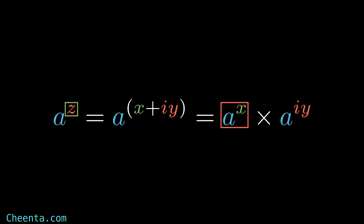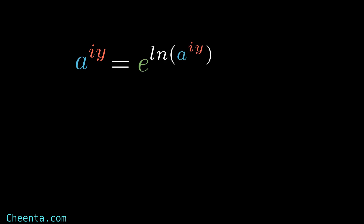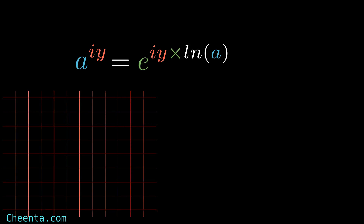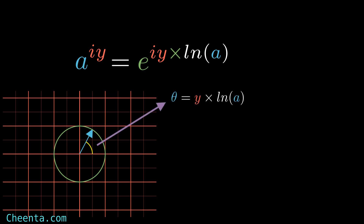Now let's see what a to the power iy means. We can write this using the logarithmic function as e to the power of i times (y log a). This is e to the power i times some number. Taking a 2D complex grid, we take a phasor along the real axis on the unit circle. This e to the power i times some term means we take a unit phasor and rotate it along the unit circle, where the angle between the phasor and the real axis equals the exponent.